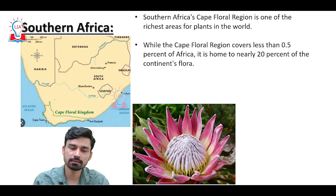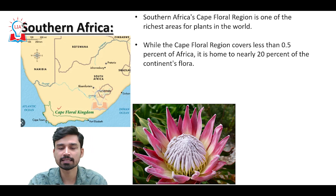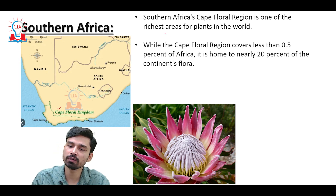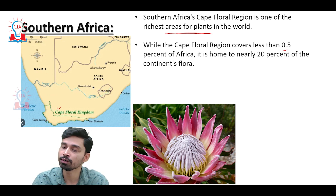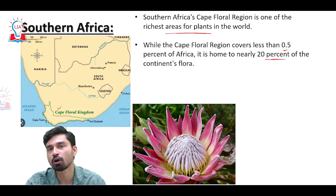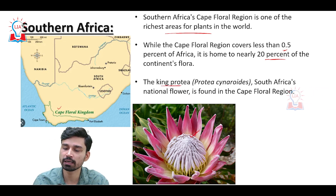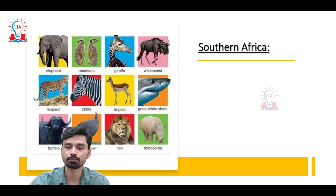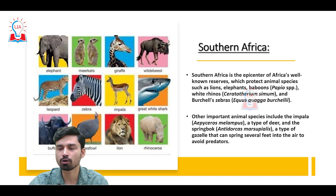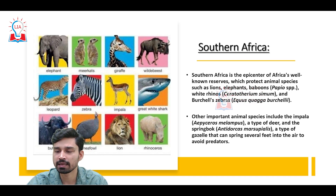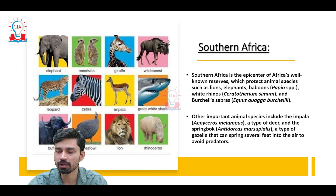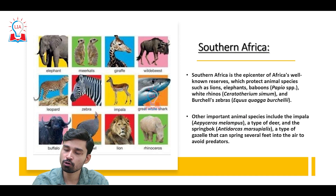In terms of floral biodiversity, the southernmost part of South Africa is referred to as the Cape Floral Region or Cape Floral Kingdom. It is one of the richest areas for plants in the entire world — while covering less than 0.5 percent of Africa, it is home to nearly 20 percent of the continent's plant life. The South African national flower, the King Protea, is also found in this region. Animal life includes lions, elephants, baboons, white rhinos, Burchell's zebra, impala, and springbok — a type of gazelle that can spring several feet into the air to avoid predators.